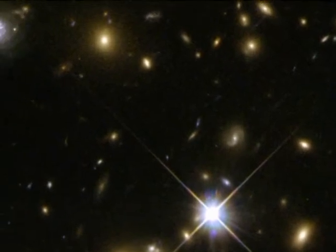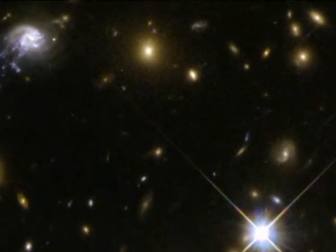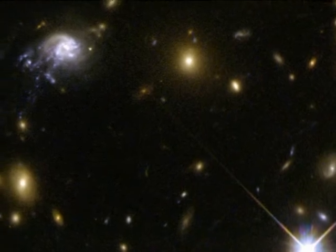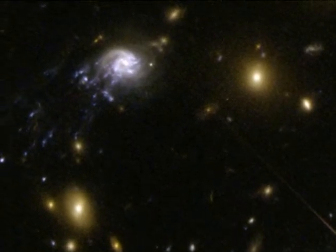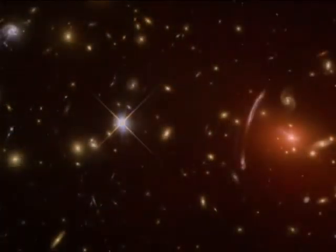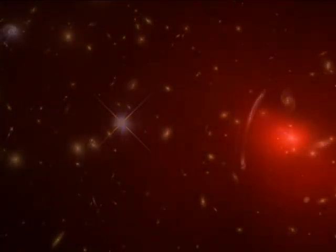Abel 2667's enormous gravitational field is generated by the combined contribution of the cluster's dark matter, hot gas, and hundreds of galaxies. As the galaxy plows through the cluster, its gas and stars are being stripped away by the hot plasma in the cluster, which can reach temperatures as high as 10 to 100 million degrees.